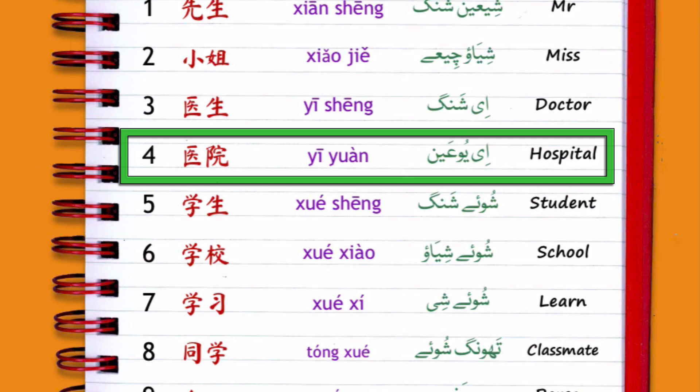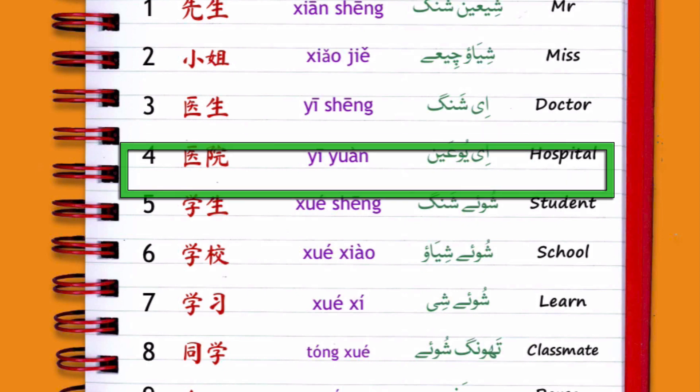Number 4 is 医院 (yīyuàn). Note the 'n' is nasal — yīyuàn. 医院 means 'hospital.'